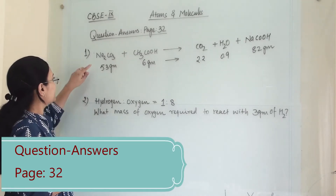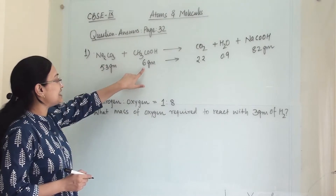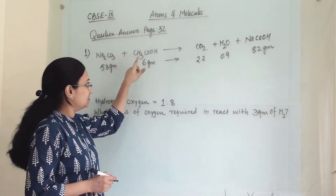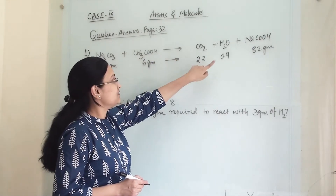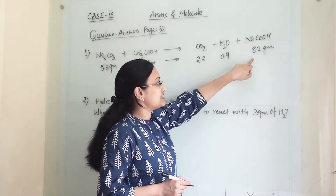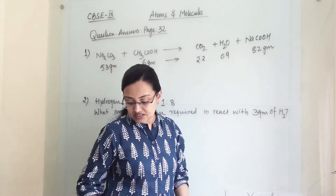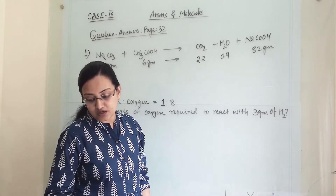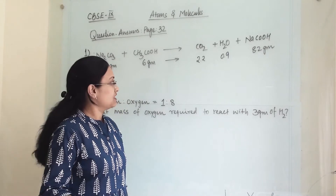The first question states that 0.3 gram of sodium carbonate is reacting with 6 gram of acetic acid. We will get 2.2 gram of carbon dioxide, 0.9 gram of water, and sodium acetate of 8.2 gram. The question asks us to show that these observations are in agreement with the law of conservation of mass.